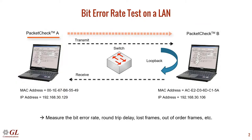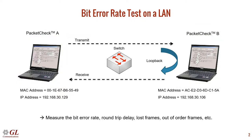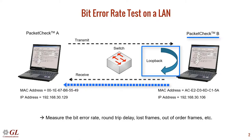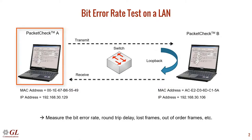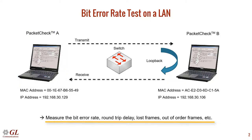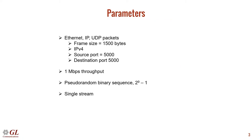PacketCheckA will transmit to PacketCheckB. PacketCheckB will then loop back traffic to PacketCheckA. All relevant statistics will be computed on PacketCheckA, such as the bit error rate, round-trip delay, lost frames, and so on.